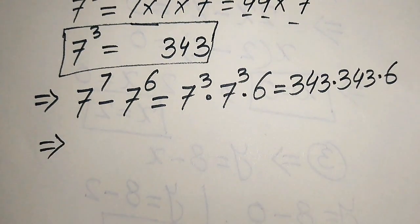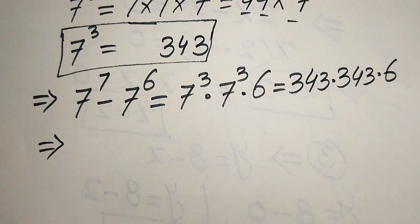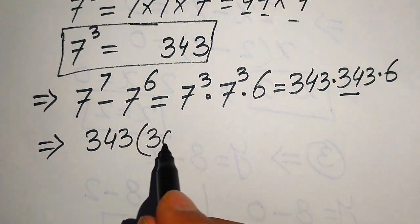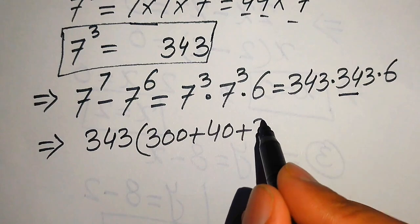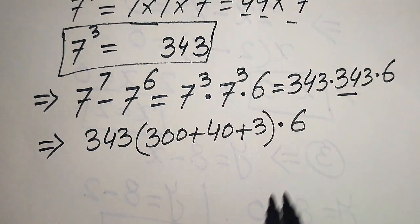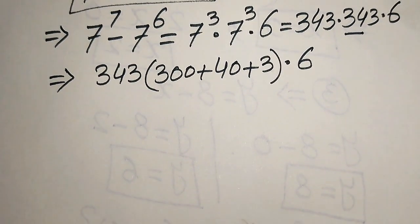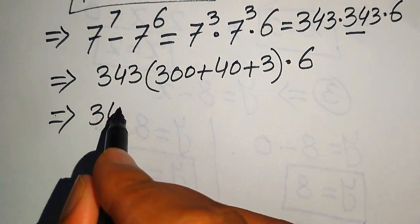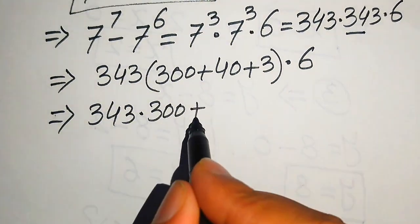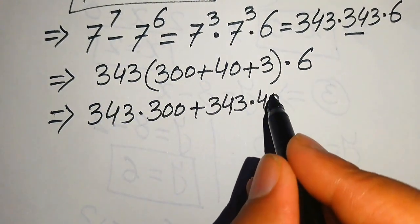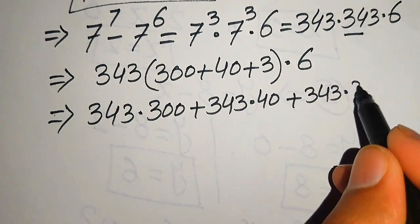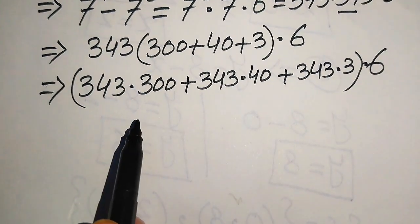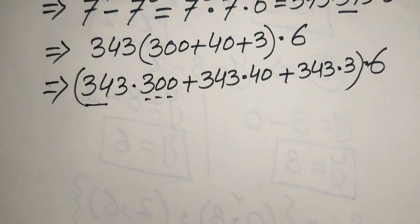Here I introduce a nice method for multiplying larger numbers. We break 343 into 300 plus 40 plus 3, so we write 343 multiplied by 343 as 343 multiplied by (300 plus 40 plus 3), and at the last step we multiply by 6. We distribute 343 across each of these values.